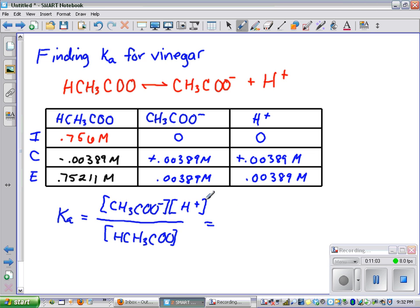So we get square brackets means use moles per liter. So I will 0.00389 times 0.00389 divided by 0.75211.